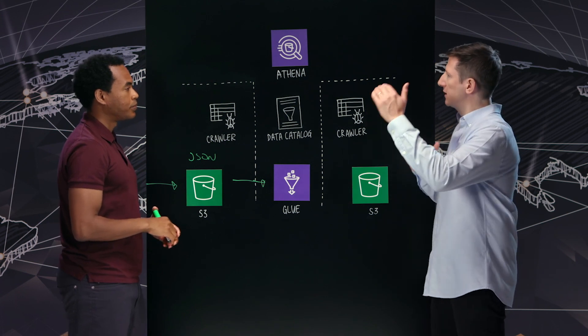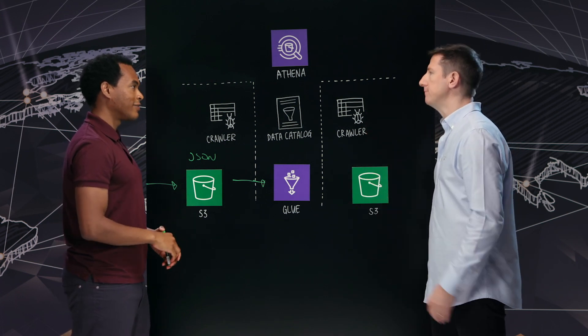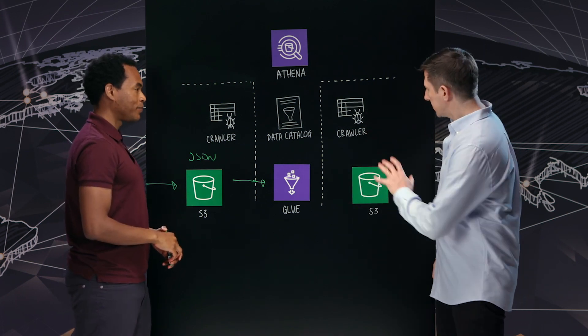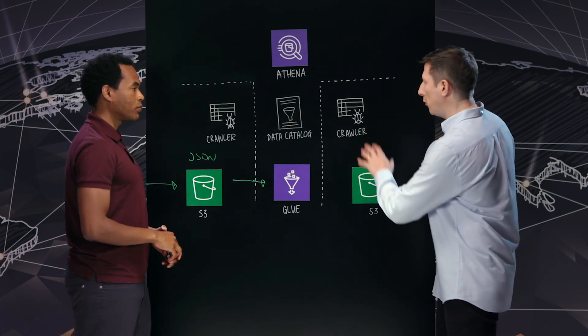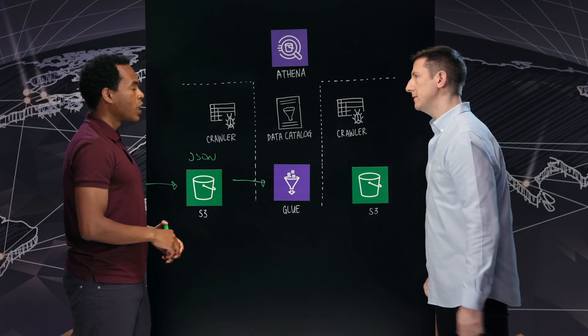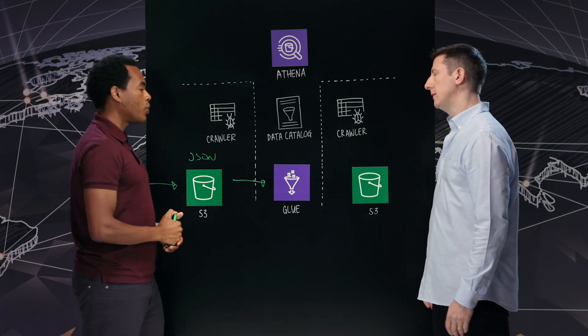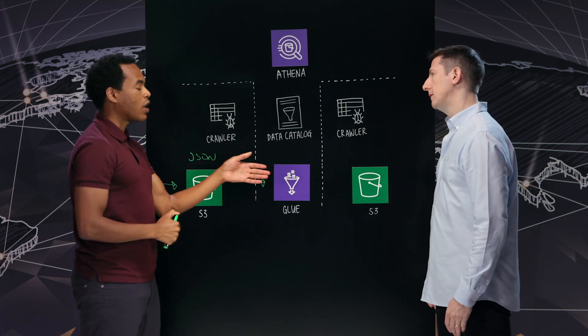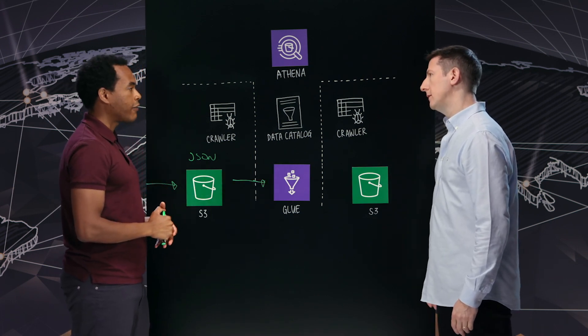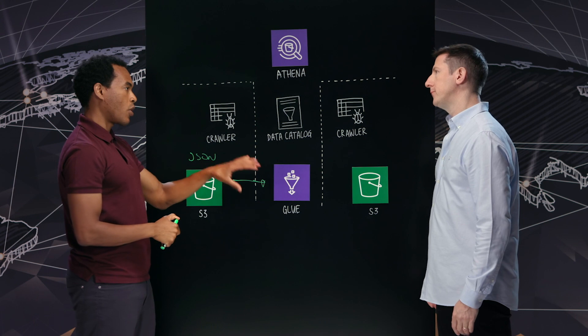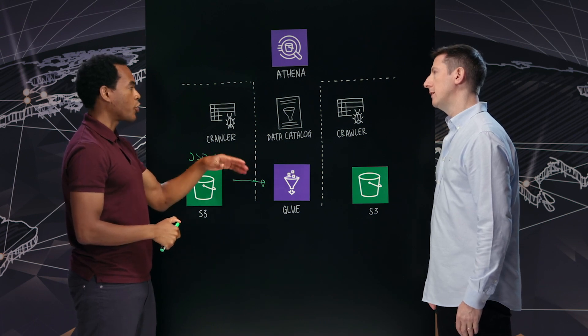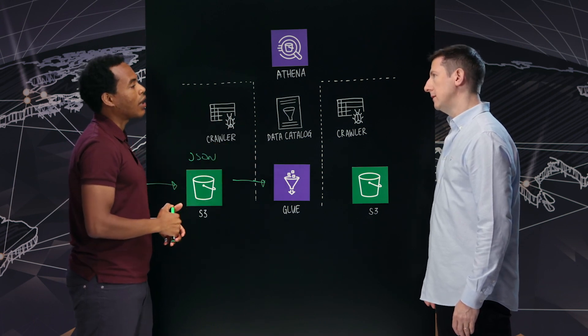It's passing a smaller subset of data in that respect. Does this get crawled as well and put into the data catalog? Yes, the Glue crawler will also catalog the Parquet files, and that information will also be stored in the data catalog.